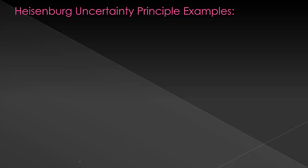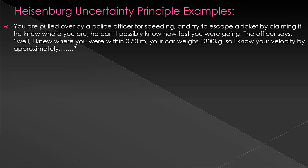To do this, let's look at a problem made from this joke. It says that we're pulled over by a police officer for speeding and we try to escape a ticket by claiming that if he knew where we were, which he must, he can't possibly know how fast you are going.